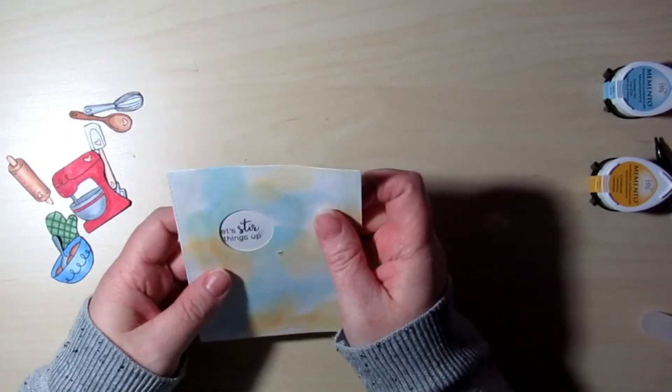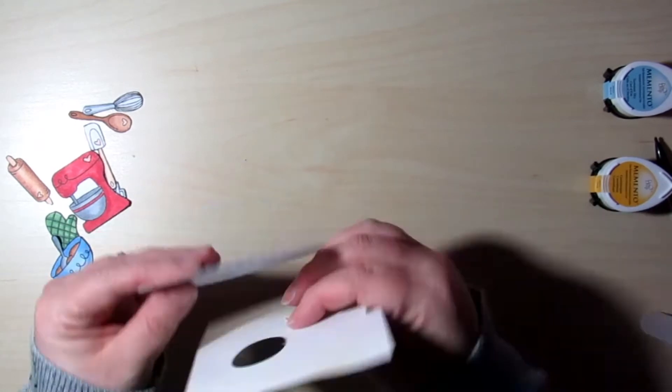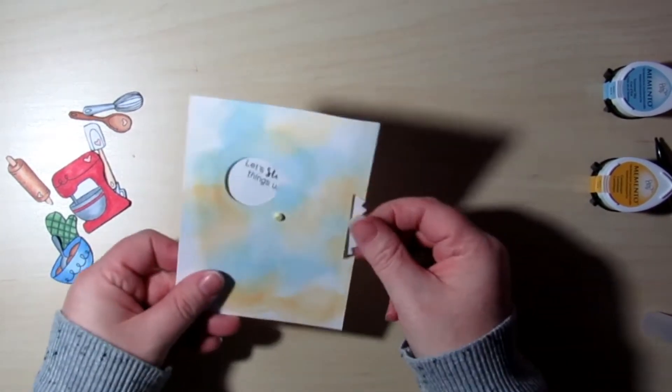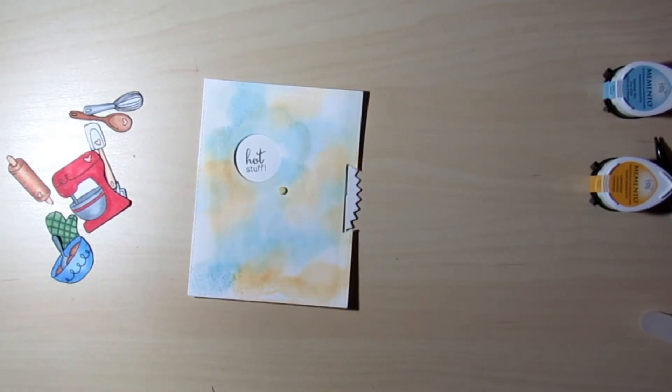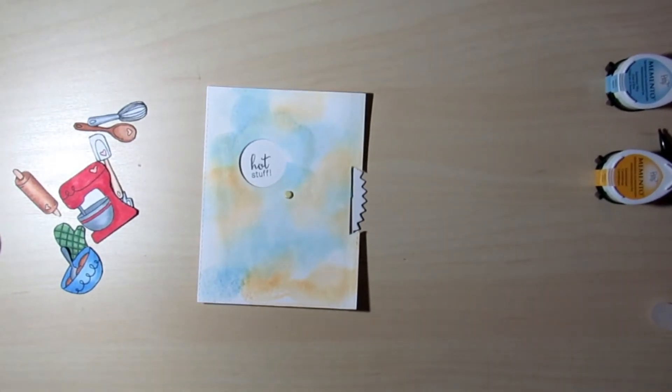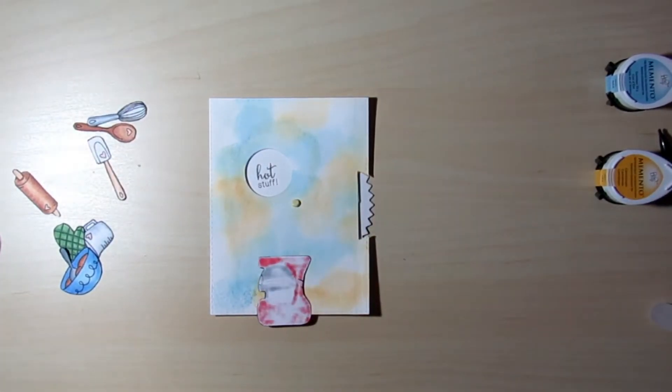So now I'm going to put the wheel and the panel together with the brad. Now to cover the brad, I am going to be using the mixer from the stamp set. It is the biggest image from the stamp set. And I thought it would be great to hide that little brad holding that in place.